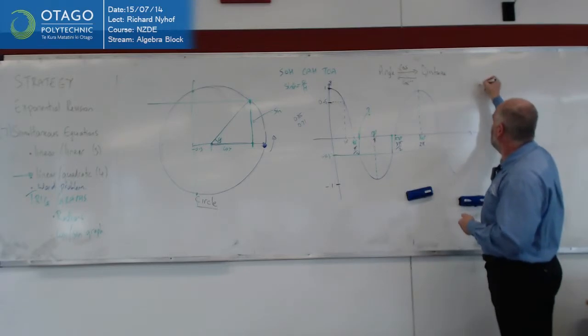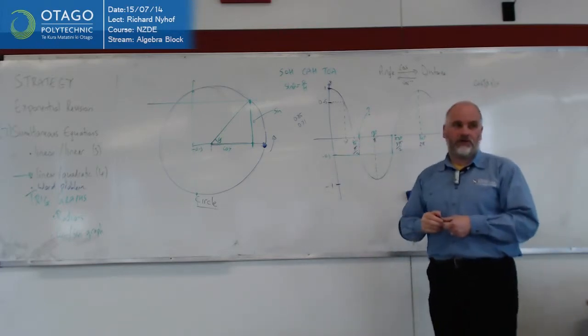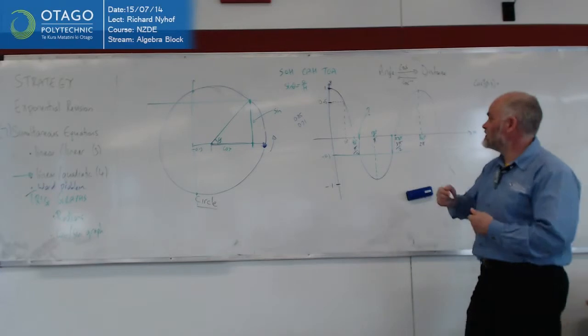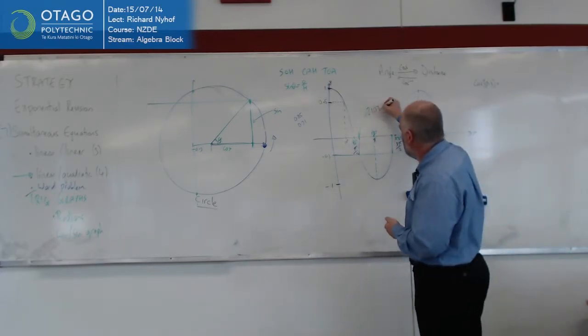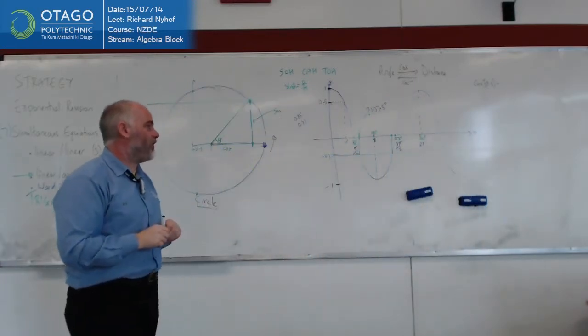So what I'm doing here is cosine inverse of negative 0.3. And hopefully that gives you something a bit bigger than 90 degrees. 107.46. Call it 107.5, shall we? Yep. So we know that happens at 107.5 degrees.